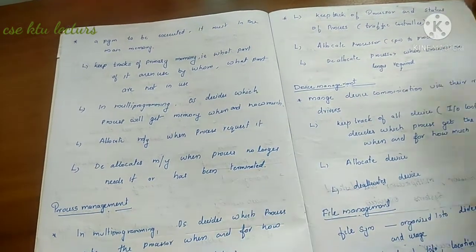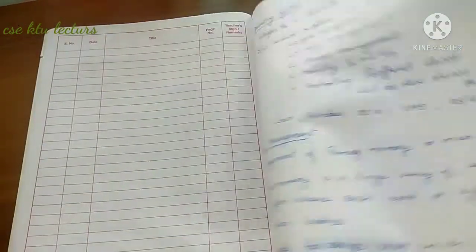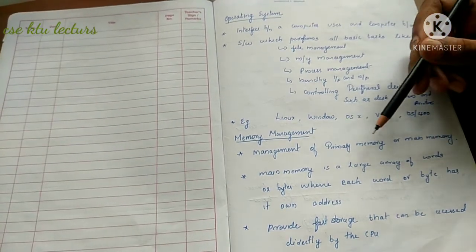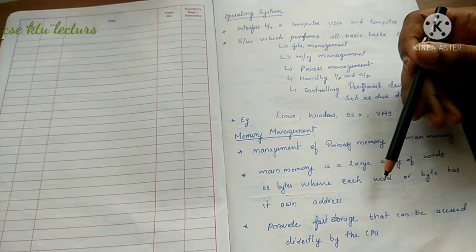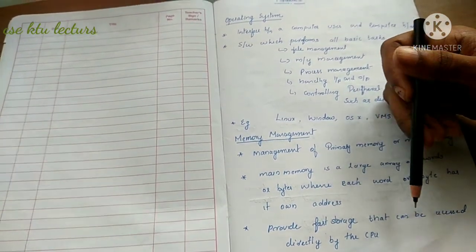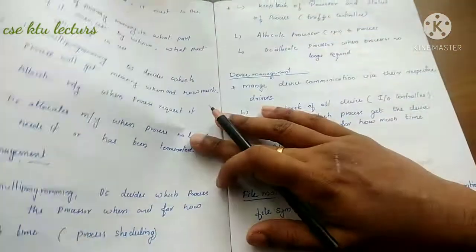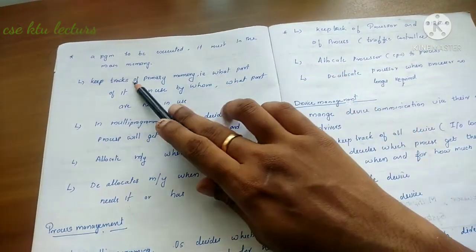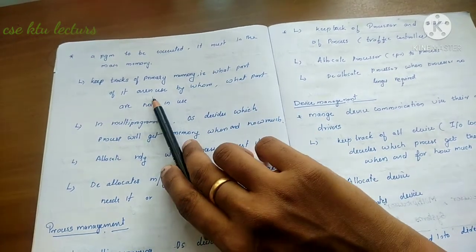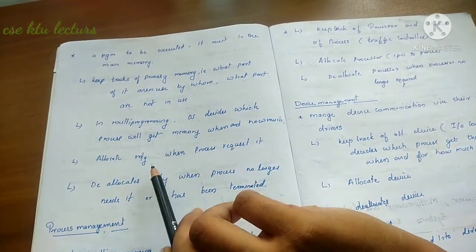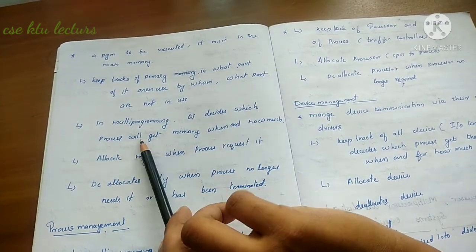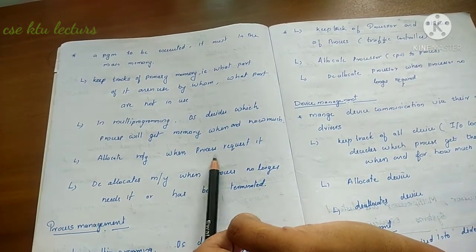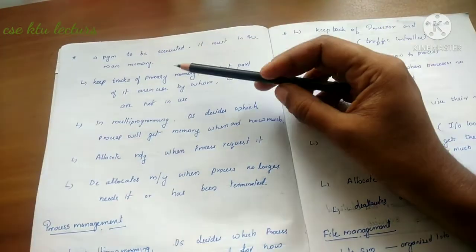Memory management involves management of primary memory, which is a large array of words or bytes, each with a unique address. It provides vast storage directly accessible by the CPU. Programs to be executed must be loaded into memory. The operating system keeps track of which parts of memory are used and by whom. For multiprogramming, the OS decides which process gets memory, when, how much, and then allocates and de-allocates accordingly.